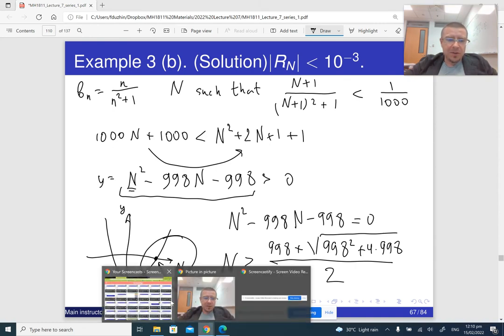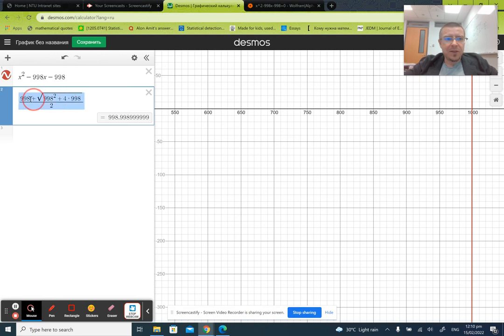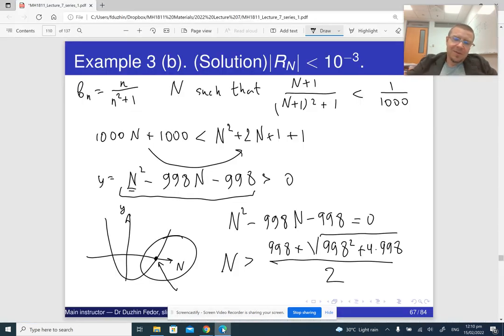And you can just use a calculator to do it. So here is what I did. This is my expression. And it is basically 998 point something 999 and whatever. So the next integer that is bigger than this number is just 999. So basically, n is bigger than 999. And that's the answer.